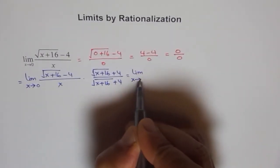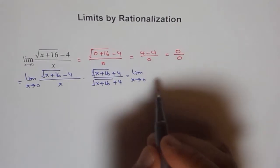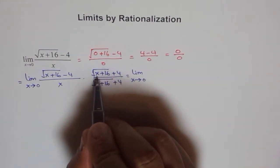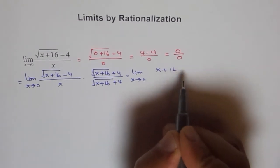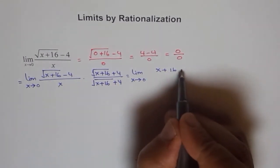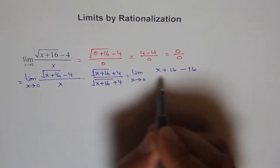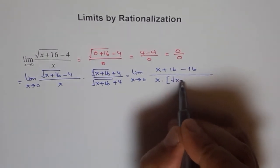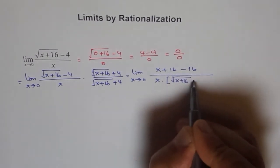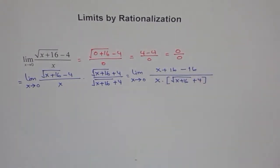So, we can write this as limit x approaches 0. And here in the numerator, we got a square will be x plus 16. And b square, which is minus 4 square, which is minus 16. And here in the denominator, we have x times this function: x plus 16 plus 4.